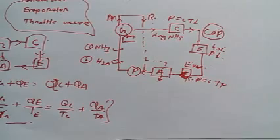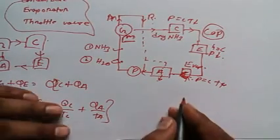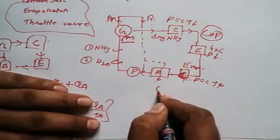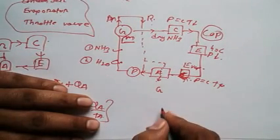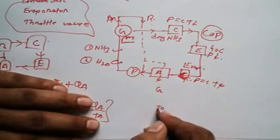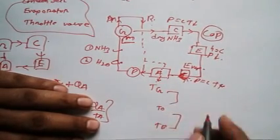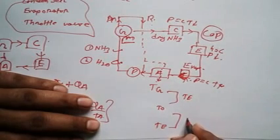Suppose that we have a generator, then we'll have TG, T naught, and TE. This will be like this - this will act as engine, this will act as refrigerator.